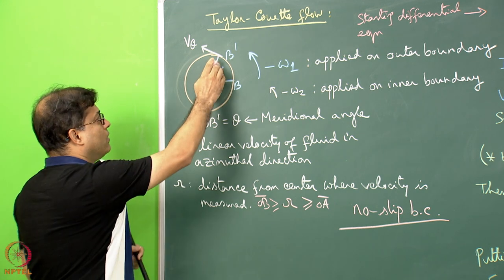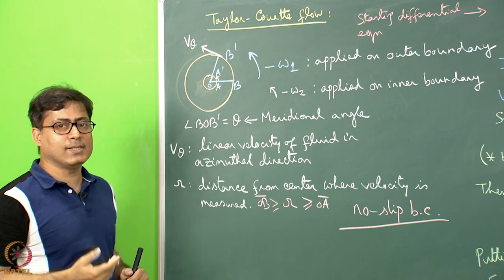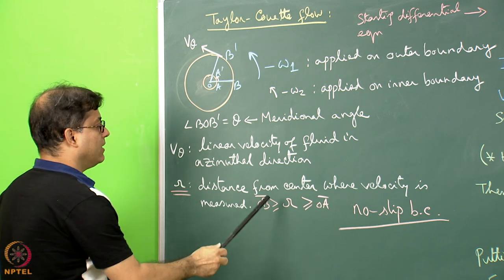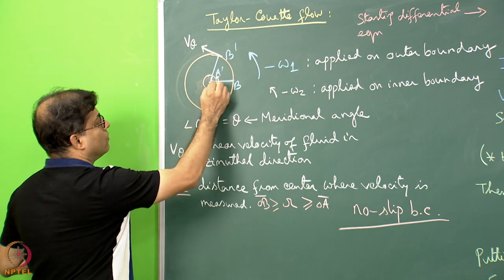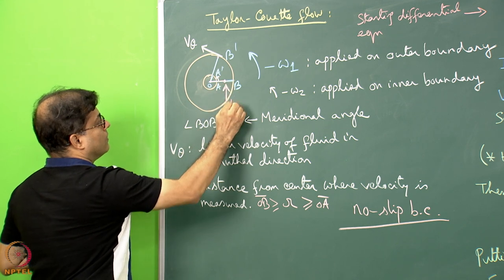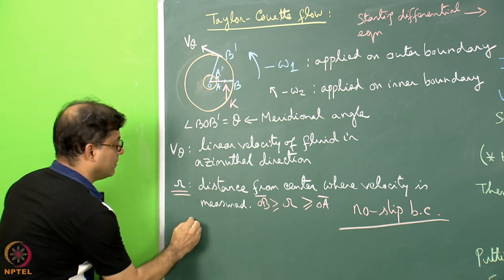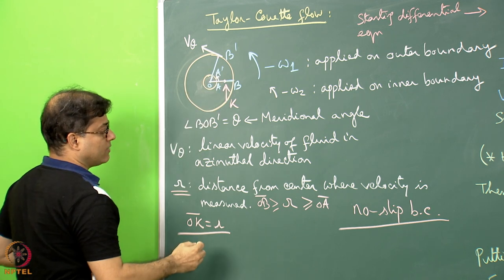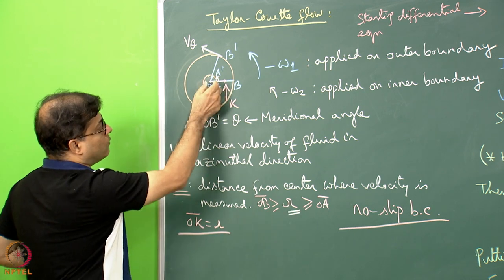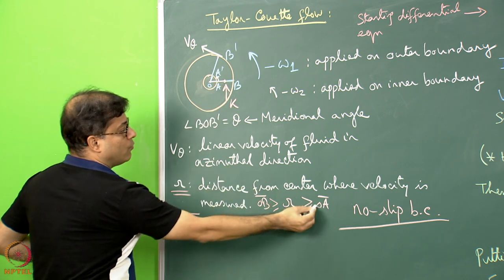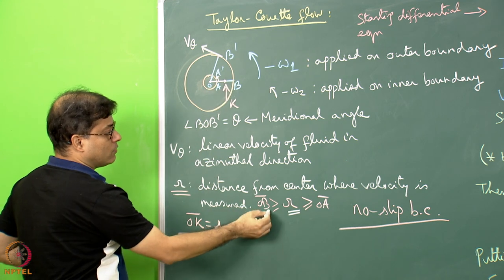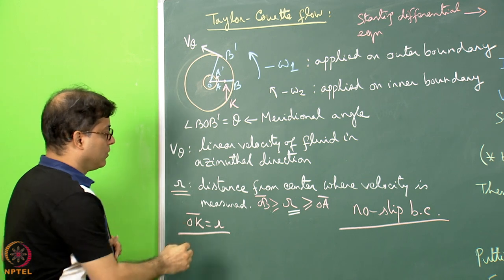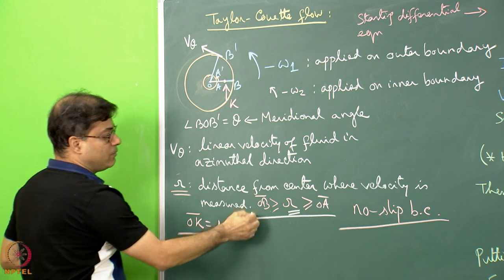There is no lagging behind of the fluid due to this rotation. Now consider small r as the distance from the centre where velocity is measured. The area of interest is between the two circular arcs, so r is either equal to OA (point A on the inner boundary), or greater than OA up to OB (point B on the outer boundary), covering the entire fluid domain.